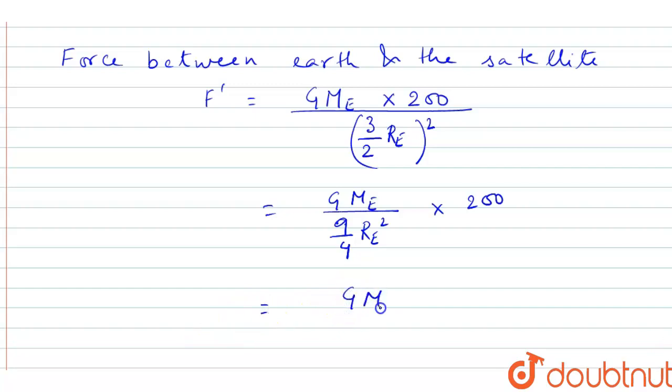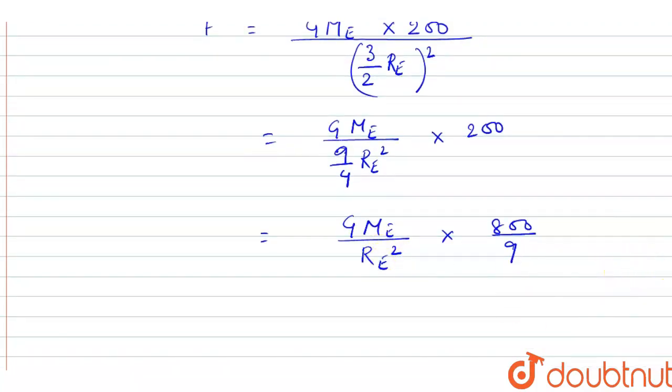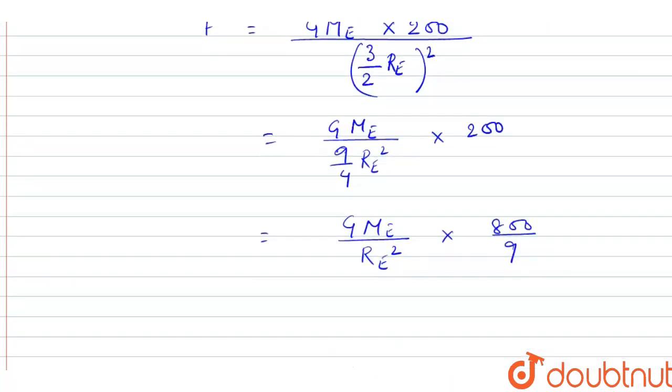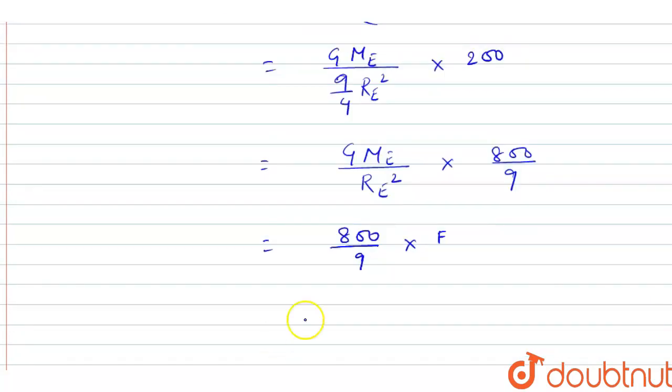Now this GMₑ / Rₑ² is nothing but F, the force between earth and mass that is placed on the earth. That is 800/9 × F, and this F is given already, so 800/9 × 10 newton, that equals 8000/9.